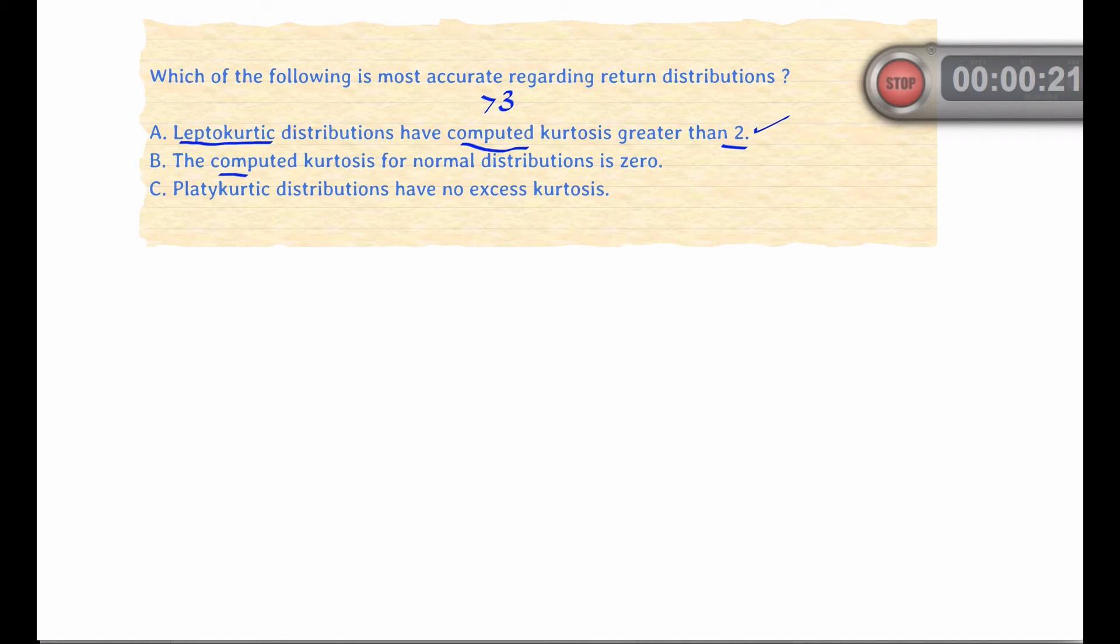Let's look at B. The computed kurtosis for normal distributions is, in fact, not 0, it's 3. So B is incorrect.